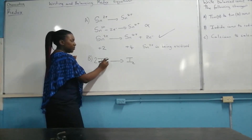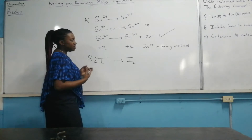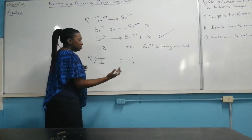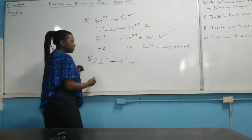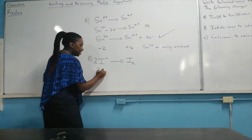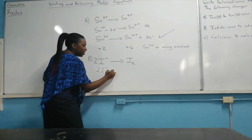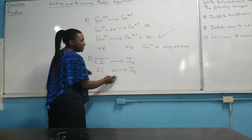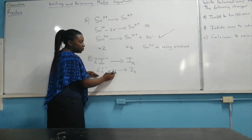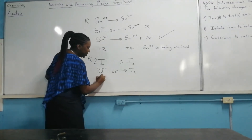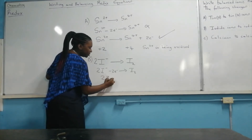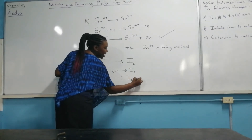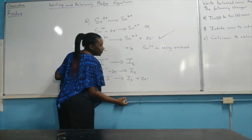The negative charge on iodide indicates a surplus of electrons. Over on the iodine side, there's no charge — it's neutral. So to get rid of these electrons, two iodide ions will lose two electrons to form iodine. Again, it is incorrect to show electrons being subtracted. So you have to indicate that two iodide ions will form a molecule of iodine and give up two electrons in the process.